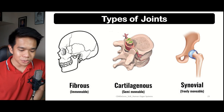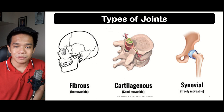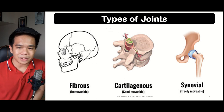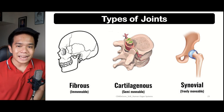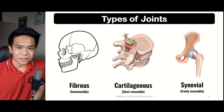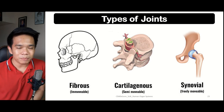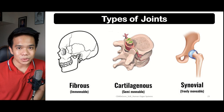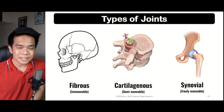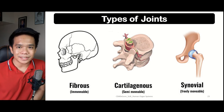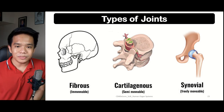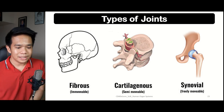Next, we have the cartilaginous or semi-movable joint. It is called cartilaginous because it has cartilages that help for the movement, but it cannot do any fixed movement. The best example is the bones of the spinal column. And lastly, we have the synovial joints or the freely movable joints, which can be classified according to the way they move.